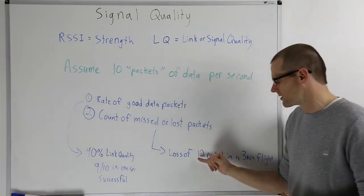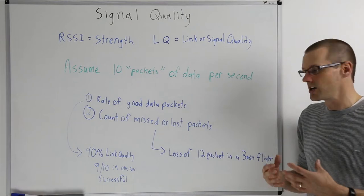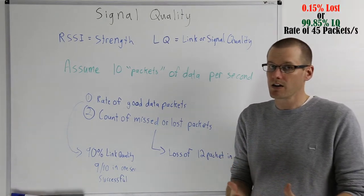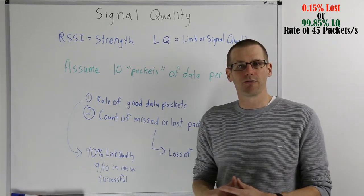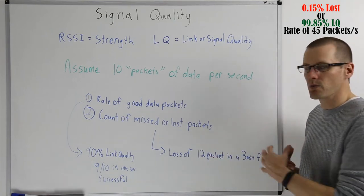Now truly, if you're only losing 12 packets of information over a three minute flight, this is a really good amount of packets lost, meaning it's not a lot at all. It's a very small amount that would be relatively okay for your typical radio controlled system.